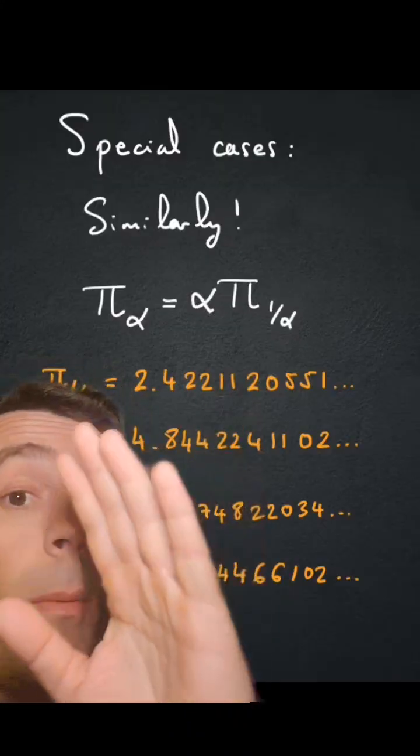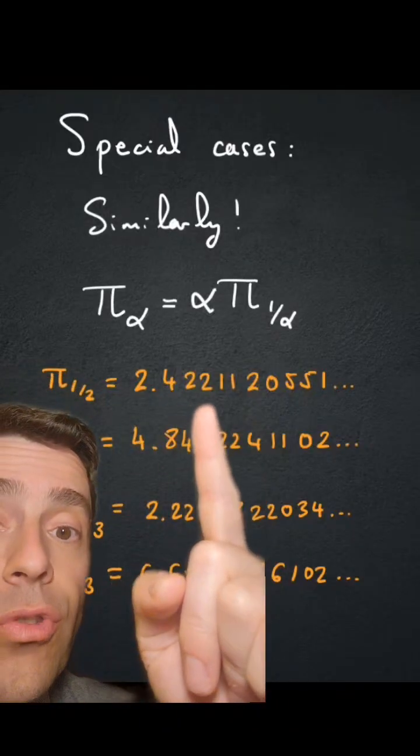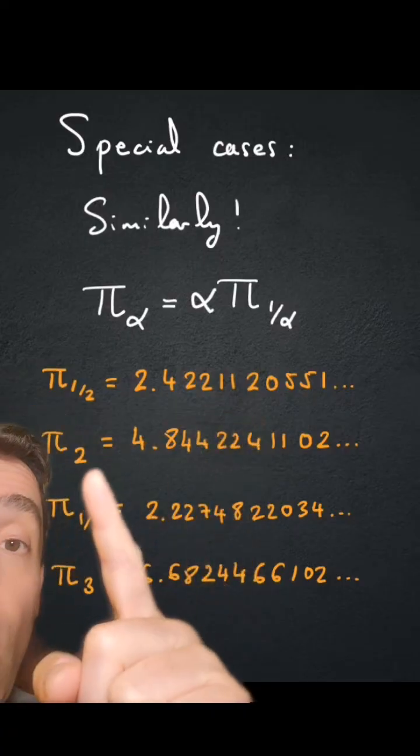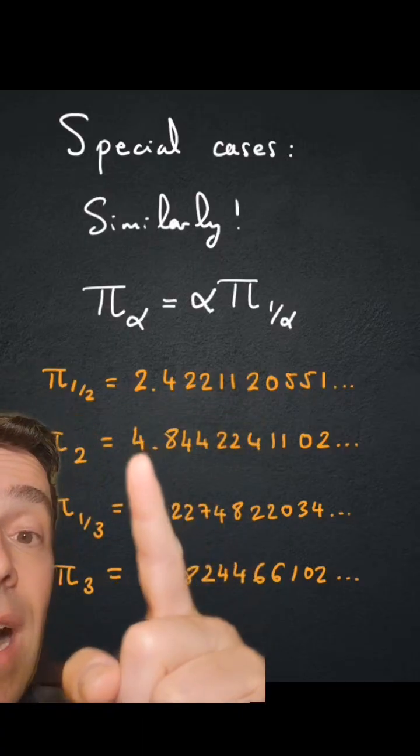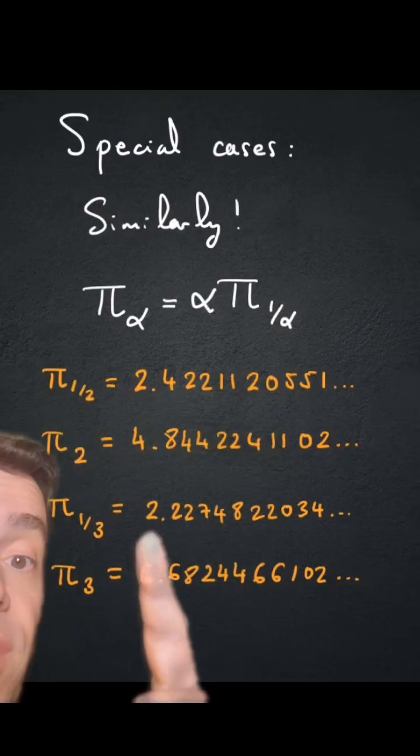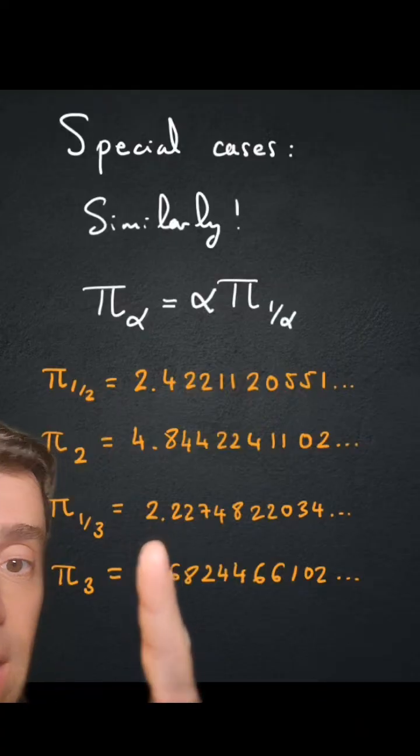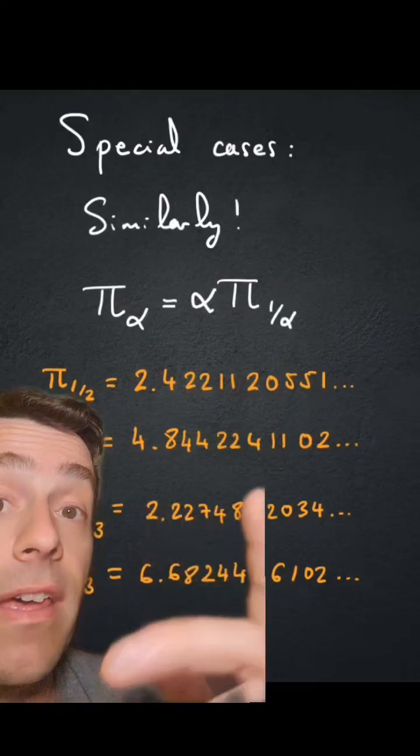Okay, before I graph it, let me compute some values. What is pi of a half? It's 2.422, etc. Pi of 2 is twice that value, 4.844, etc. Pi of a third is 2.22, etc. Pi of 3 is three times that value, 6.68, etc.